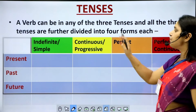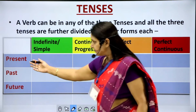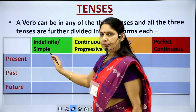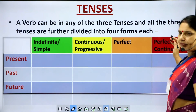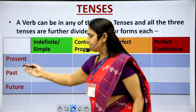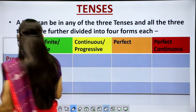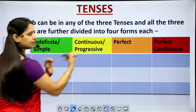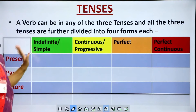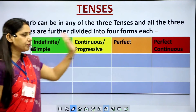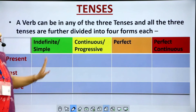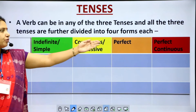All three tenses are further divided into four forms each: indefinite or simple, continuous or progressive, perfect, and perfect continuous. So in all we have twelve tenses — four for each of present, past, and future. For present: simple present, present continuous, present perfect, and present perfect continuous. For past: past indefinite, past continuous, past perfect, and past perfect continuous. For future: future indefinite, future continuous, future perfect, and future perfect continuous.